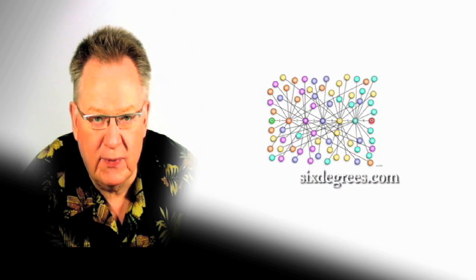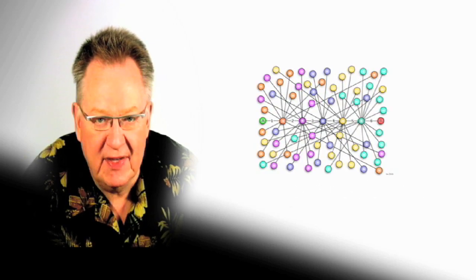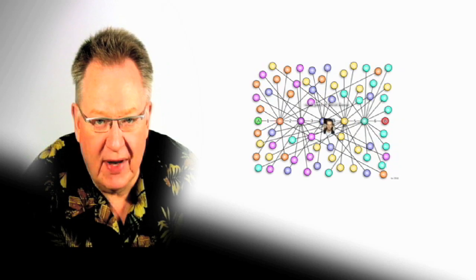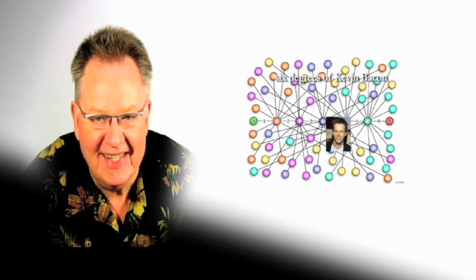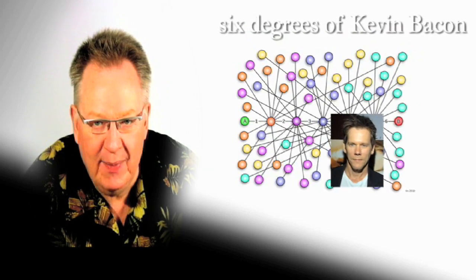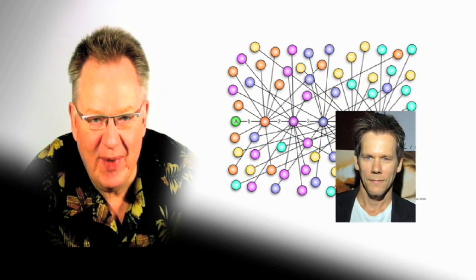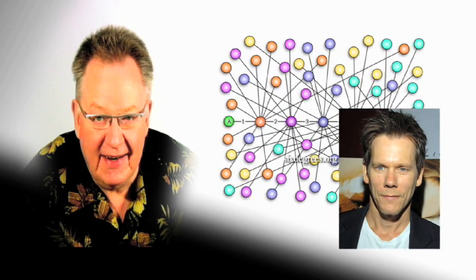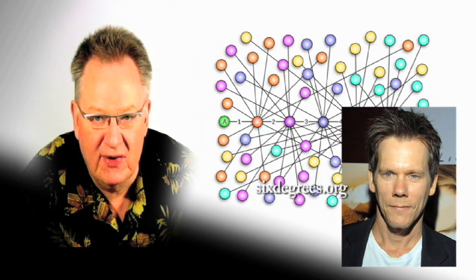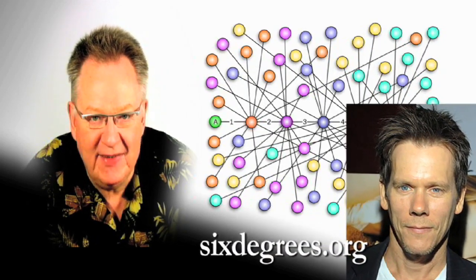For instance, SixDegrees.com was an early social networking site that ran from 1997 to 2001, and at the peak of its popularity, it had one million registered users. Six Degrees of Kevin Bacon is a trivia game that suggests no matter what actor you name, you should be able to use six steps or less to find a connection to Kevin Bacon. In 2007, Kevin Bacon started a charitable giving site called SixDegrees.org to show how this concept can be used to make people's lives better.